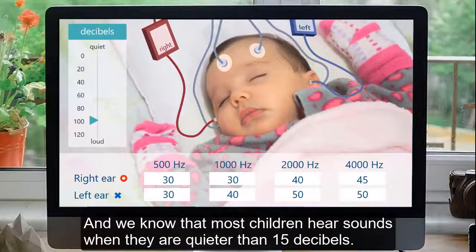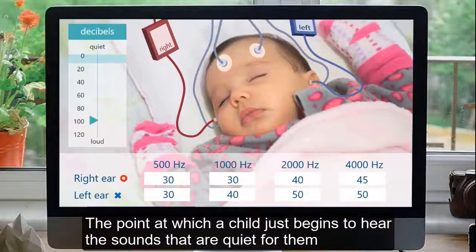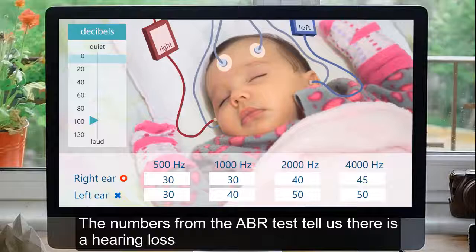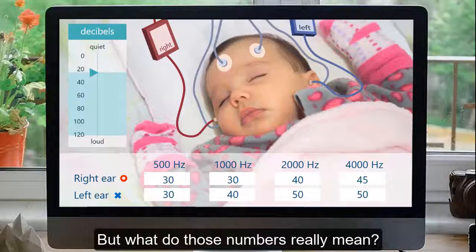We know that most children hear sounds when they are quieter than 15 decibels. The point at which a child just begins to hear the sounds that are quiet for them is called the threshold of hearing. The numbers from the ABR test tell us there is a hearing loss because the thresholds are above 25 decibels. But what do those numbers really mean?